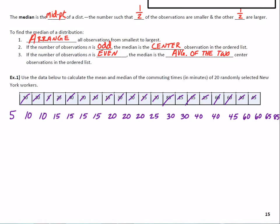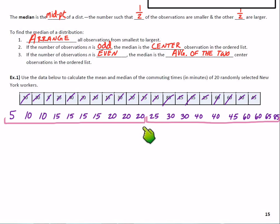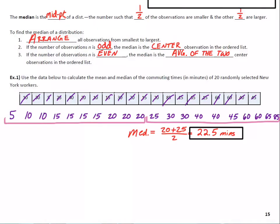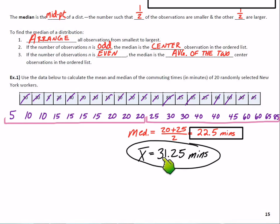Now that we've got them in order, we can look directly in the middle to find the median. With 20 total observations, count over 10 observations from either side. Right in the middle we've got 20 and 25 — those are our two middle observations. So for our median, we find the number between those two: 20 plus 25 divided by 2 gives us 22.5 minutes for our median. And then for the mean, we throw all 20 observations into our calculator, add them all up, and divide by 20. We get 31.25 minutes for x-bar.